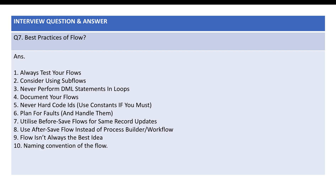What are the best practices you follow for a flow? The main thing is the naming convention — you need to create the flow in such a way that another developer, lead, or team member understands what that flow is doing just from the name, because you can create any number of flows and no one can go one by one and check all of them. Always test your flow, and consider using sub-flows — that's important. Never perform DML statements in a loop.